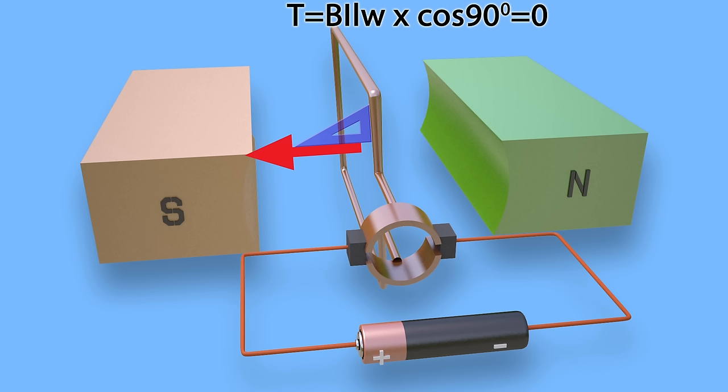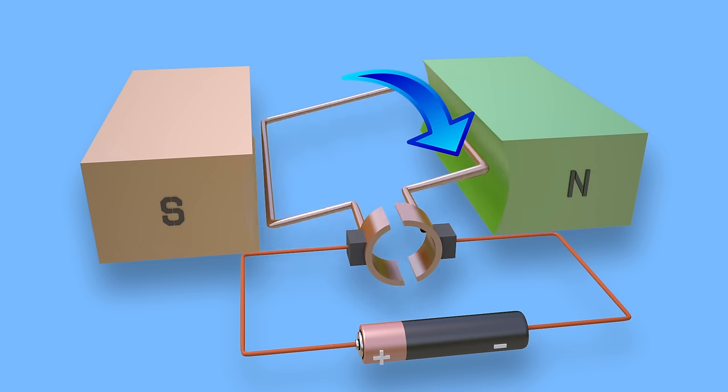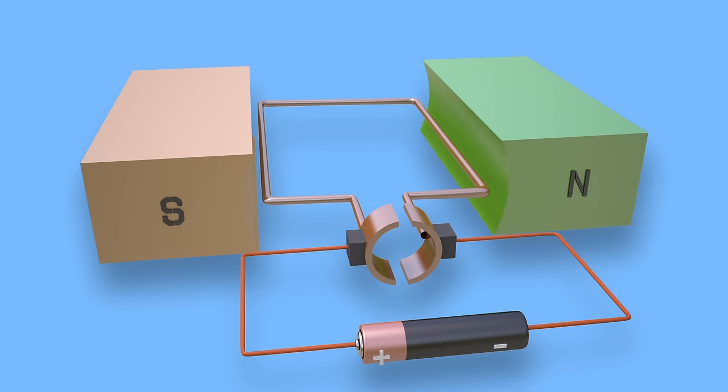After rotation of the turn, it comes to a vertical position with respect to the magnetic field. At this position there is no current in the conductor because the turn, conductor, and brushes rest between two commutators. Hence, there is no force acting on the conductor, but due to moment of inertia, the turn continues to rotate and comes horizontal again.